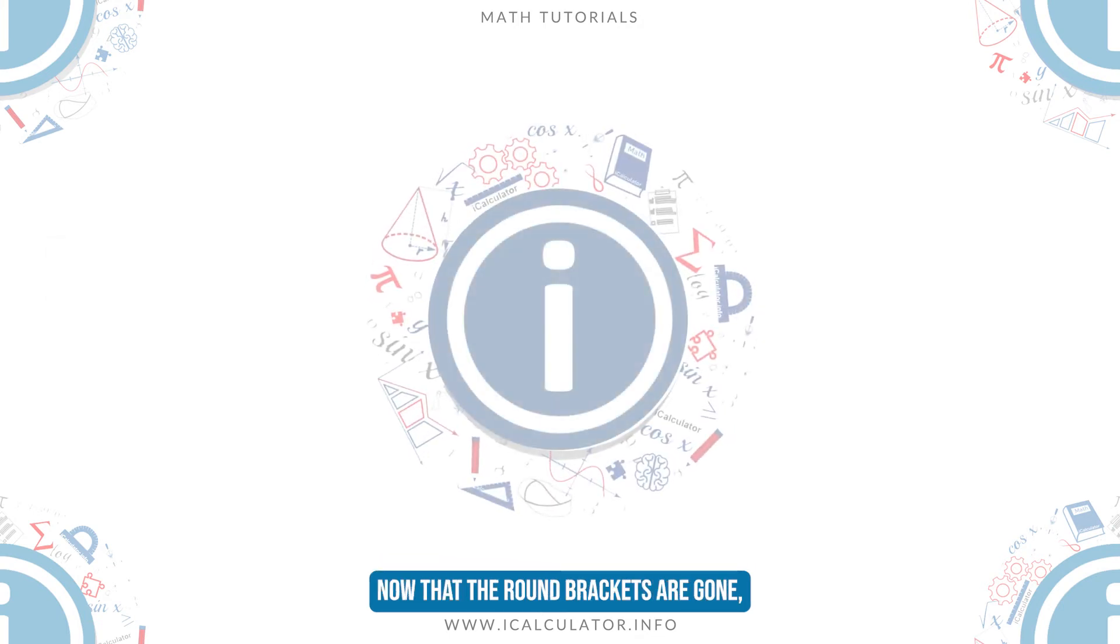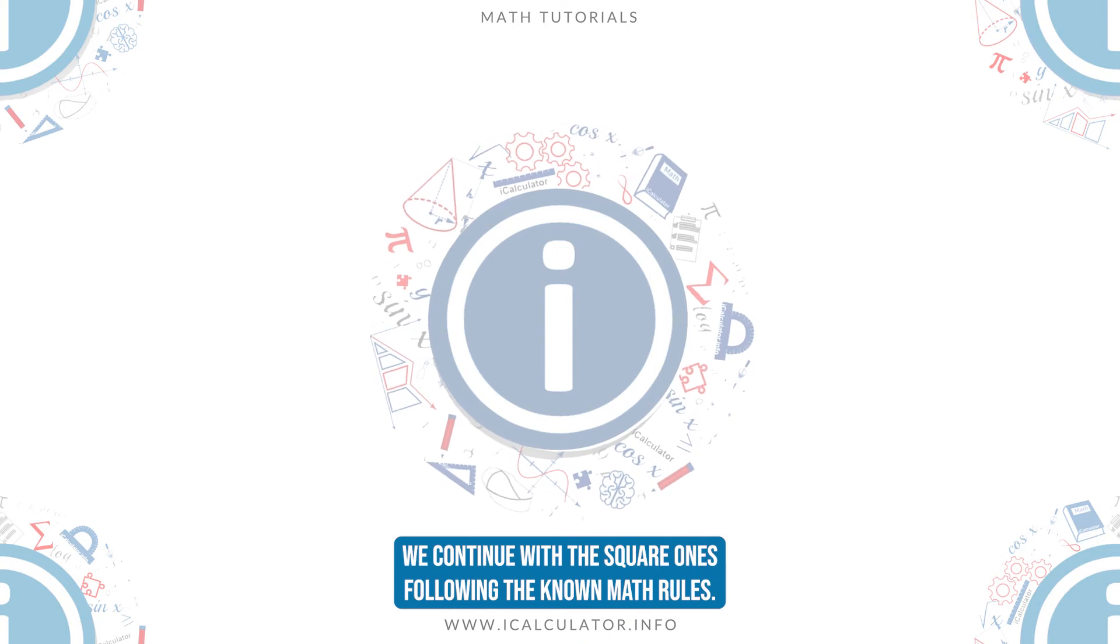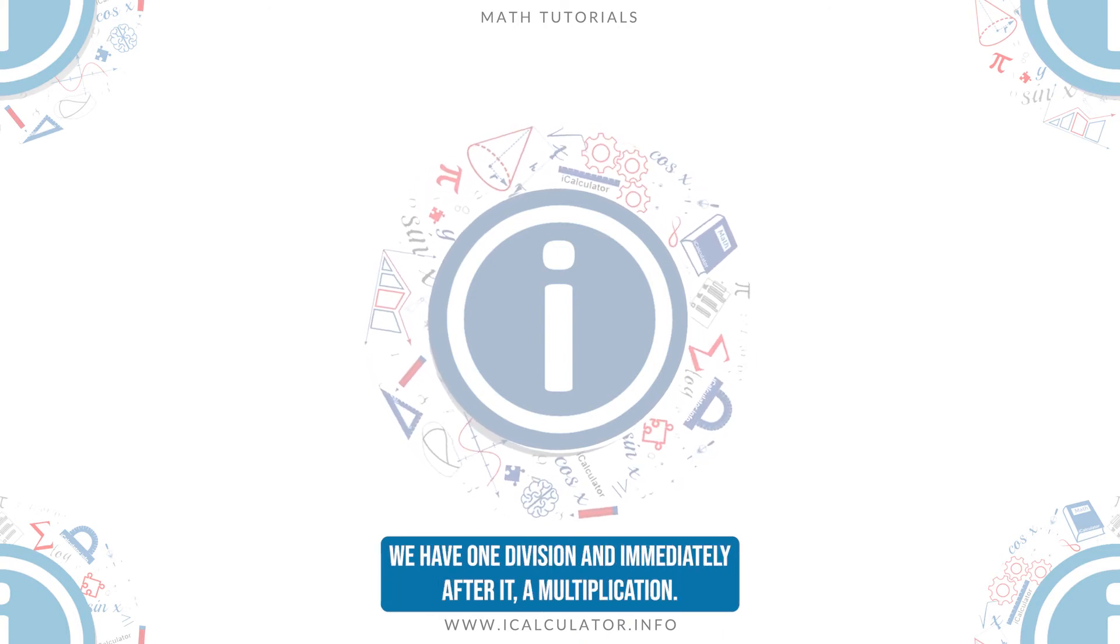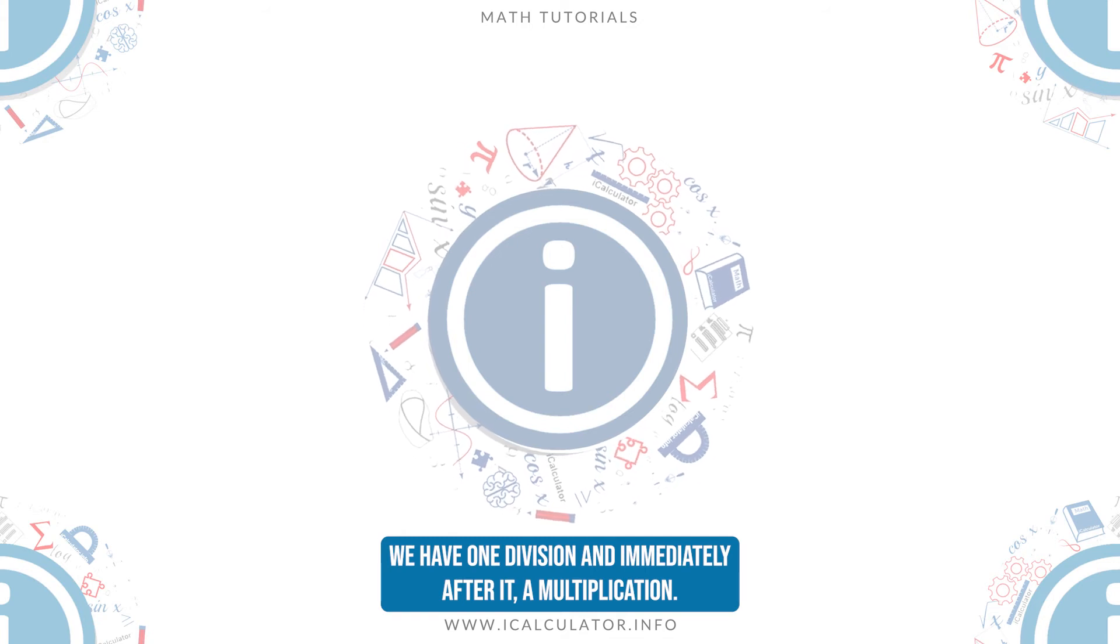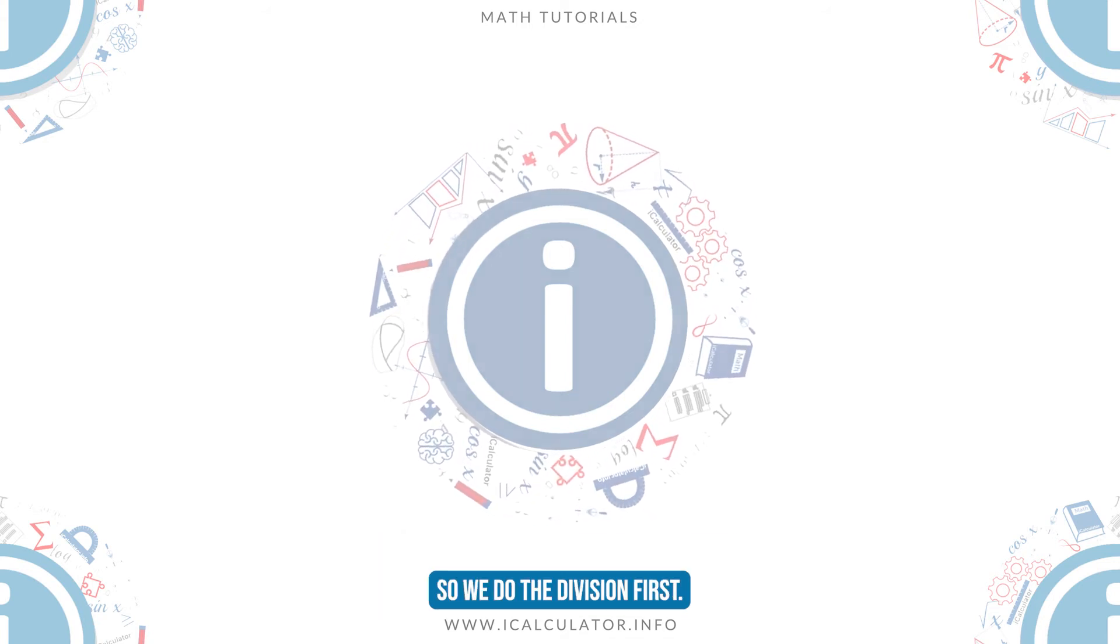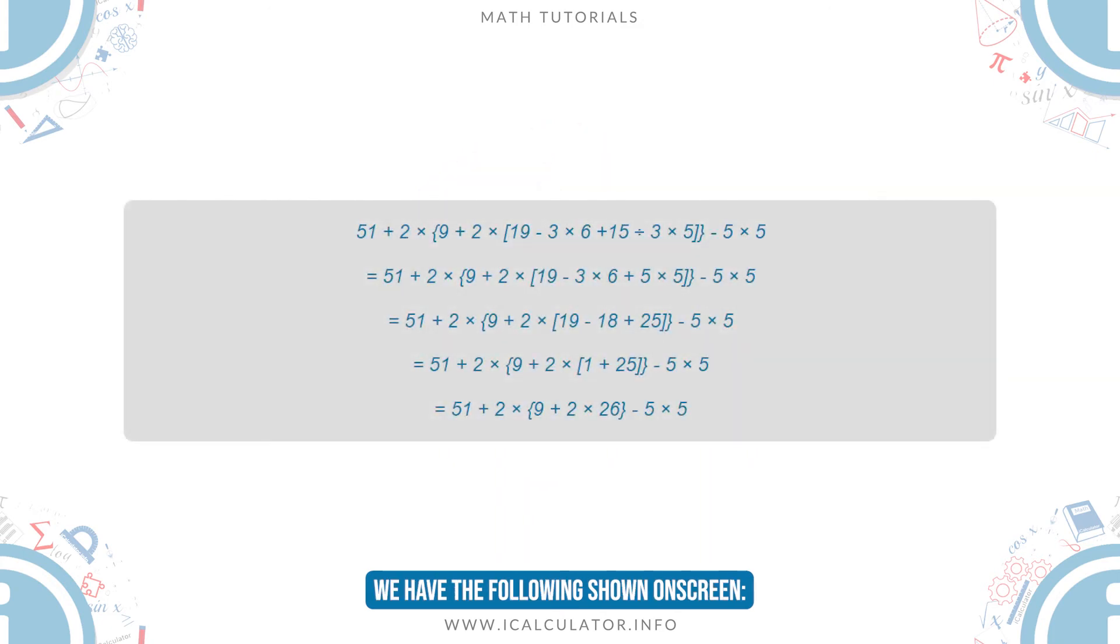Now that the round brackets are gone, we continue with the square ones following the known math rules. We have one division, and immediately after it a multiplication, so we do the division first. We have the following shown on screen.